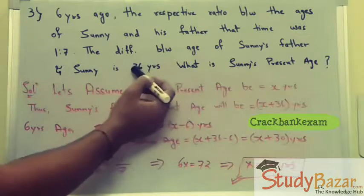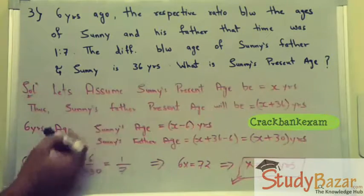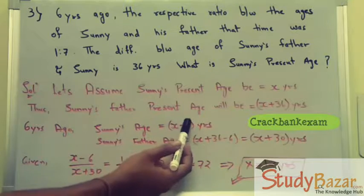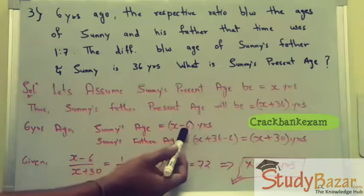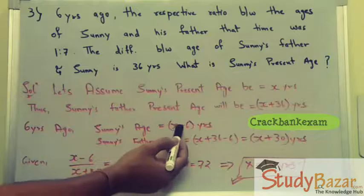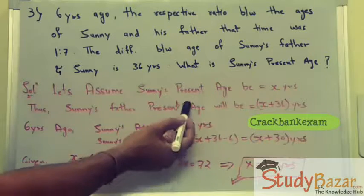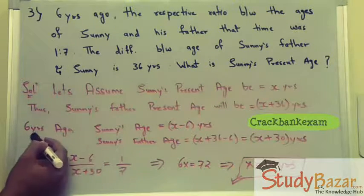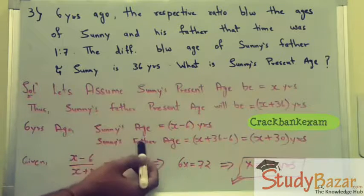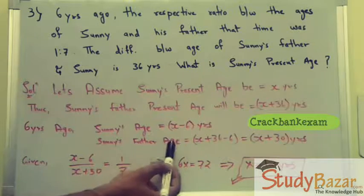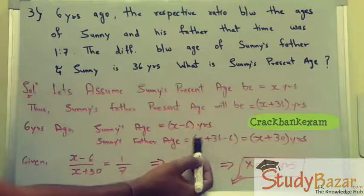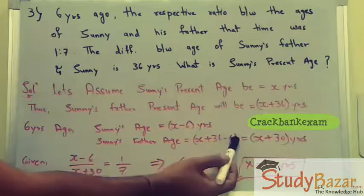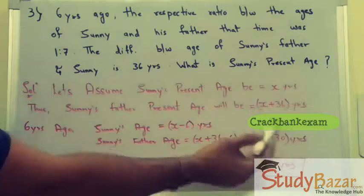Sunny's father's present age will be x plus 36 years, because the difference between the two is 36. Six years ago, Sunny's age will be x minus 6, and his father's age six years ago will be x plus 36 minus 6, which becomes x plus 30.